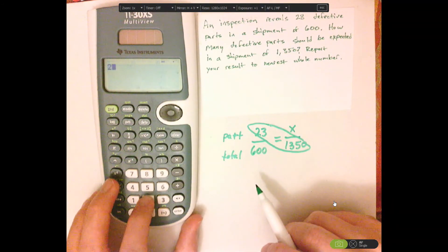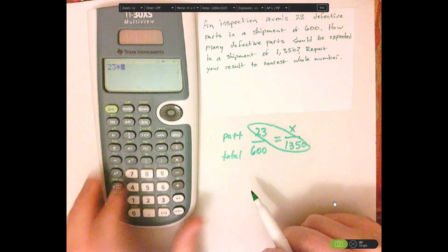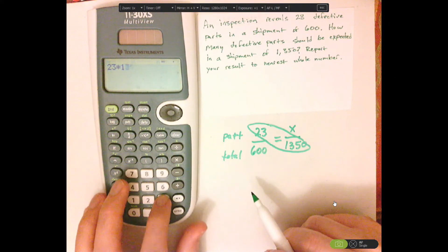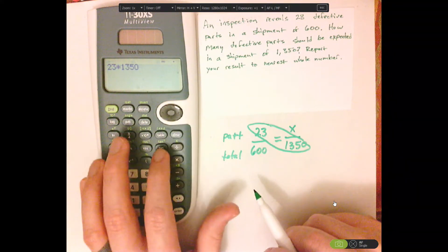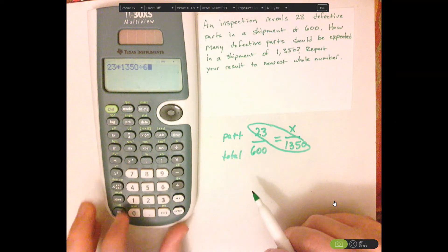So I could just type it in as 23 times 1,350 divided by 600.